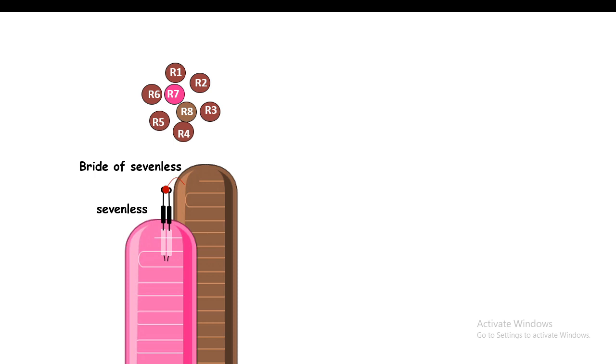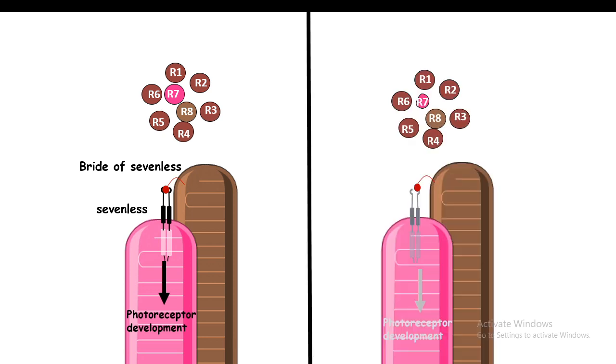In the sevenless mutant background, there is no MAP kinase pathway because the receptor is mutated. How would the signaling flow?